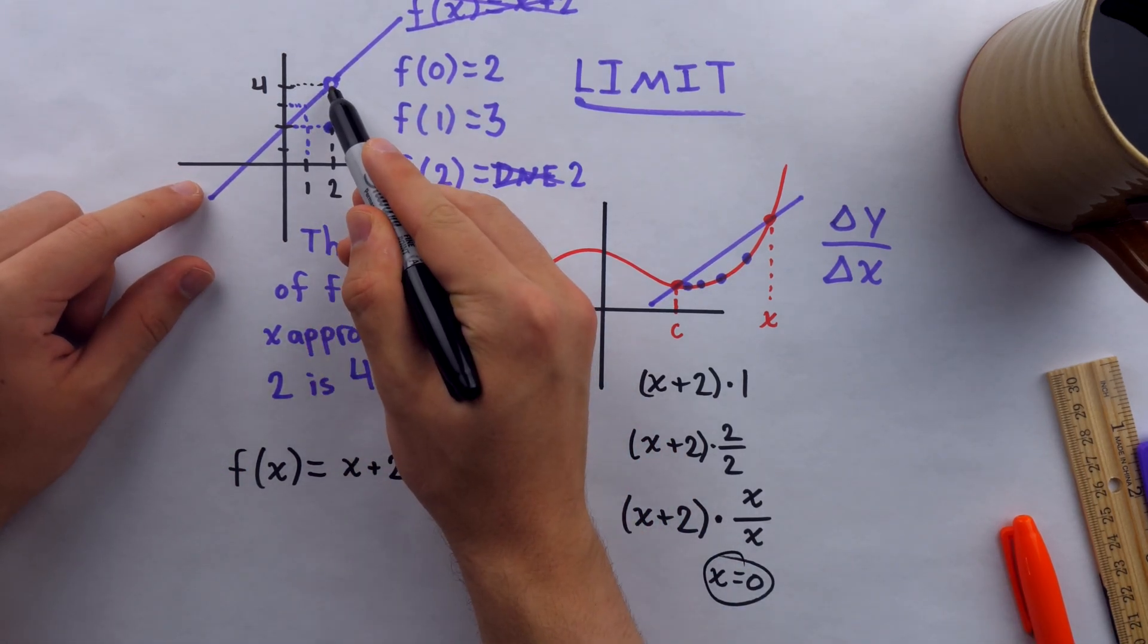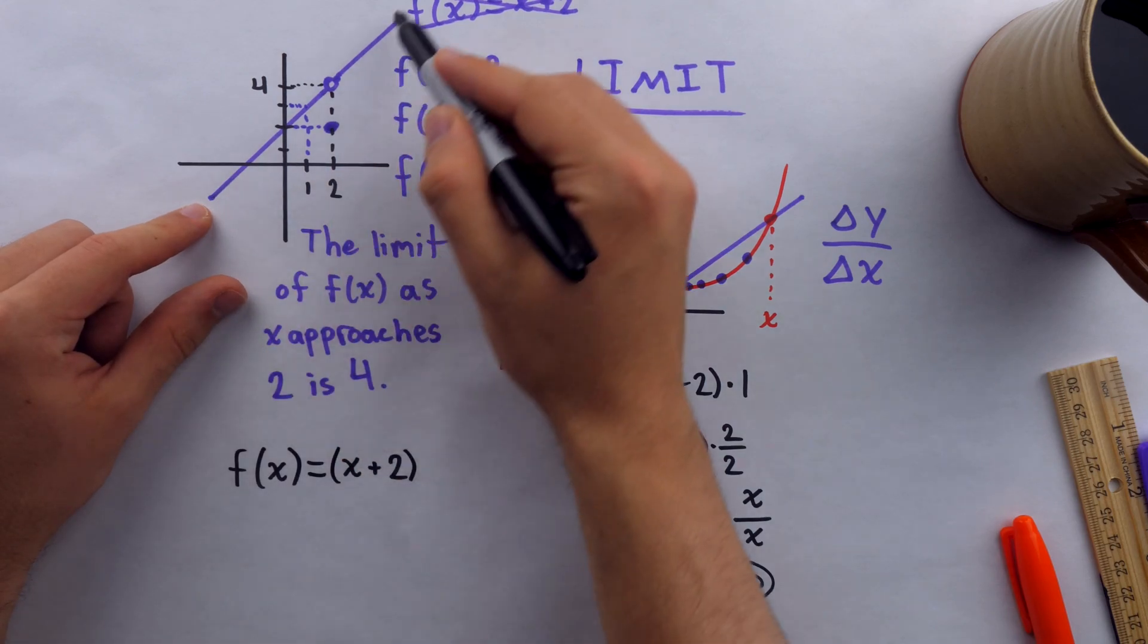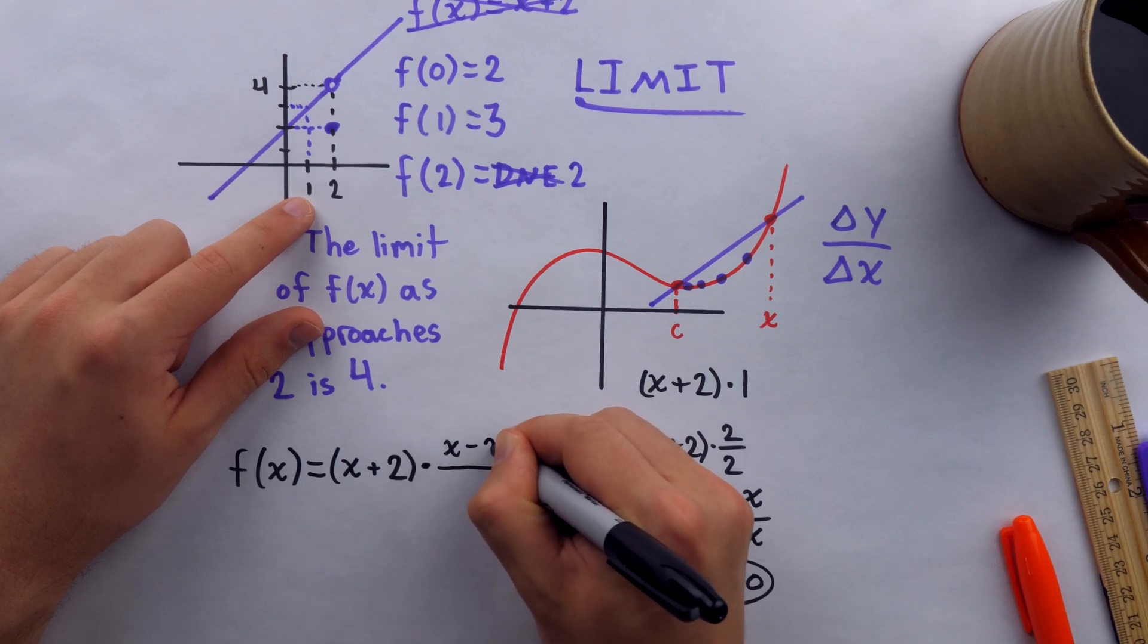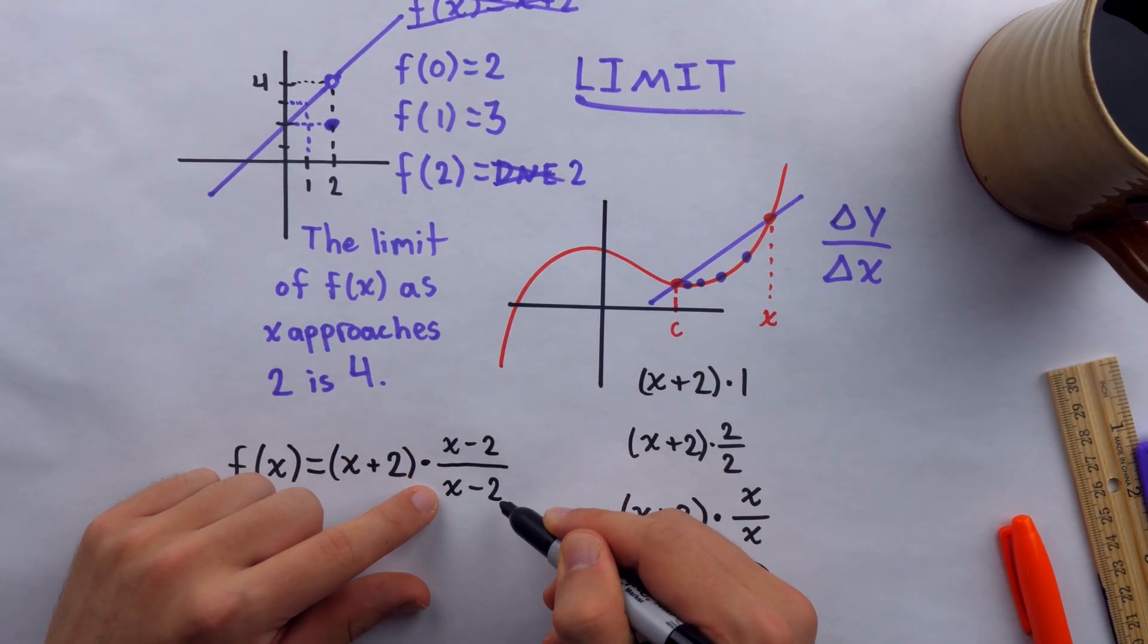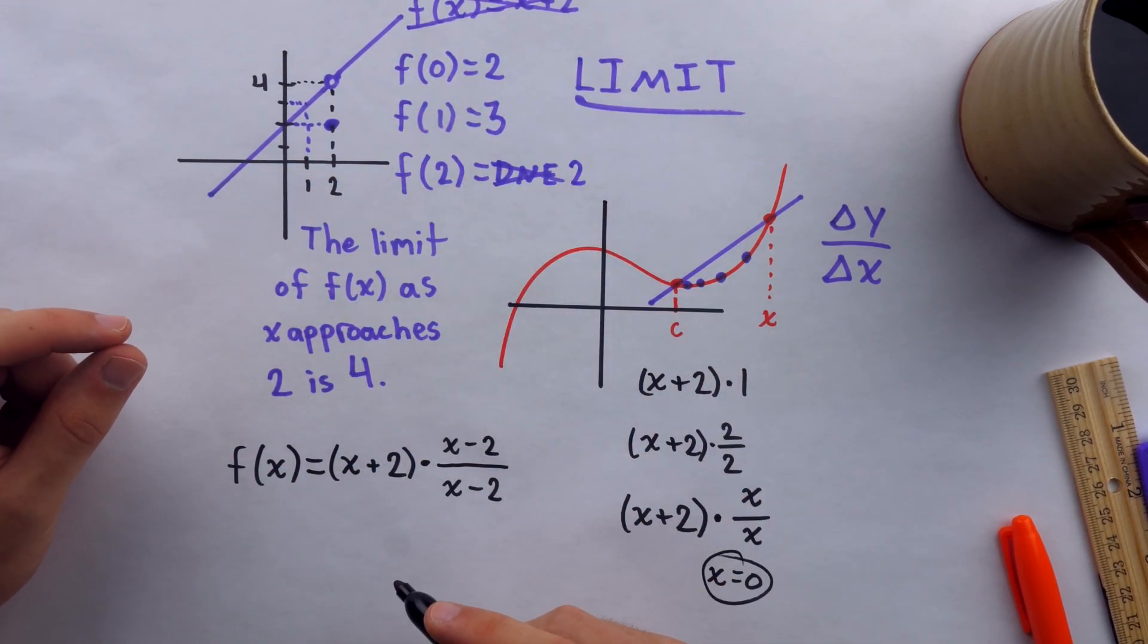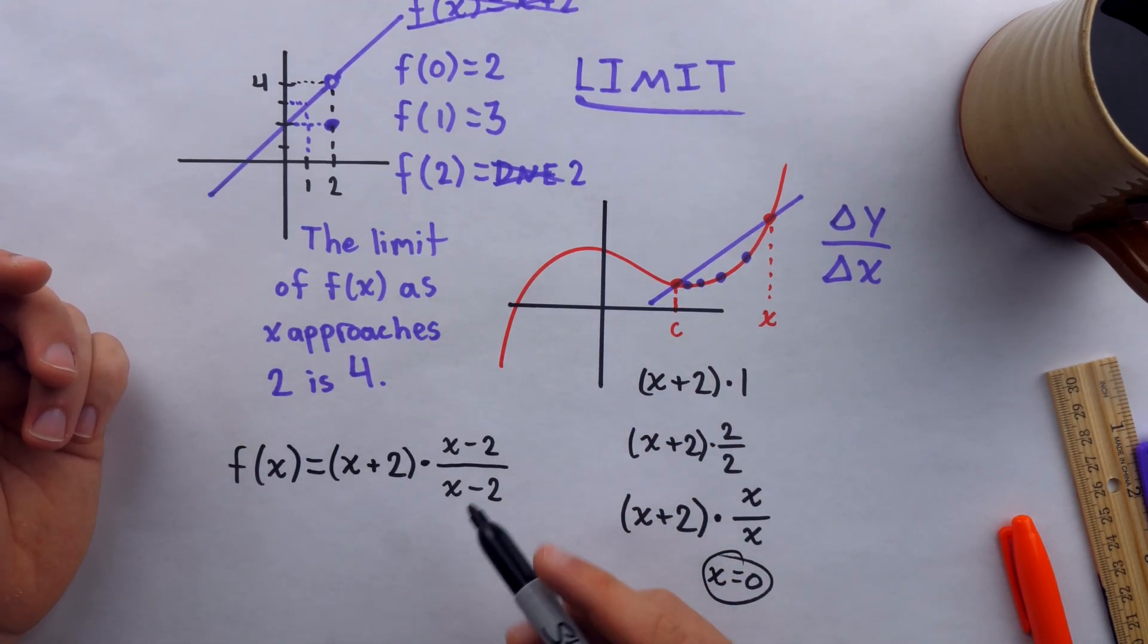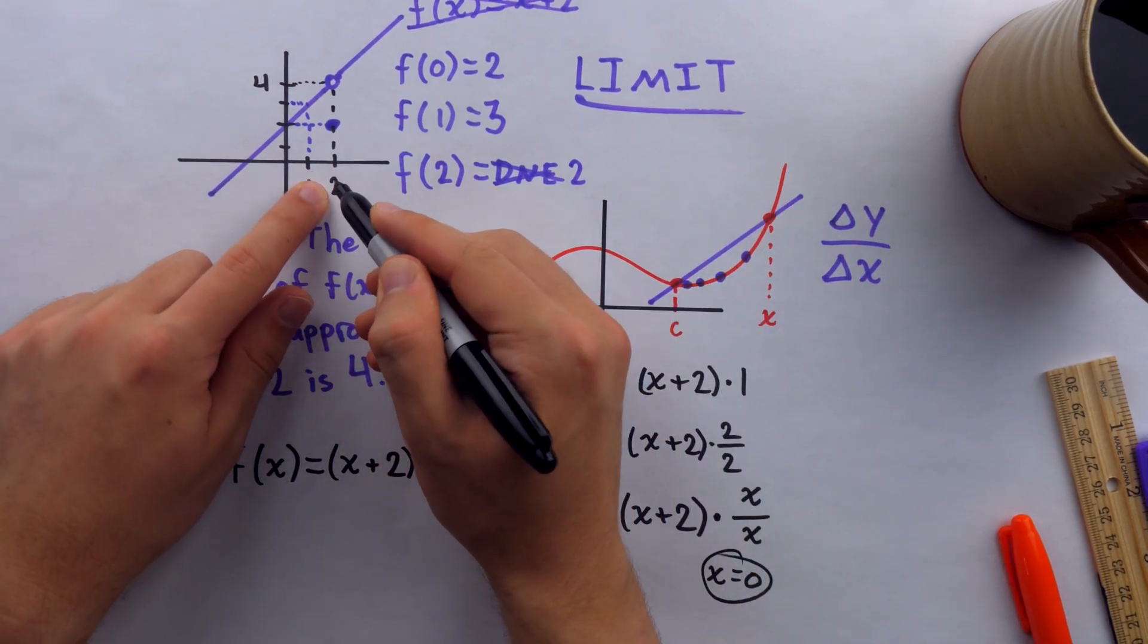Now in our case, the hole was not at x equals zero. It was at x equals two. So the equation for that original function is x plus two, which describes the line for the most part, except we need to introduce that hole at x equals two. And to do that, all we have to do is multiply by x minus two divided by x minus two. Now for any value of x, x minus two divided by x minus two, those will cancel out to one. And I'm just going to get this line like I would expect. Except when we plug in x equals two, there's going to be a problem. Because this is going to be zero, and this is going to be zero. Zero divided by zero is not one. They will not cancel out. There's going to be a hole. This expression will not be defined when x equals two. And that's how we get a line that looks exactly how we would expect, except at a single point, there's a hole.